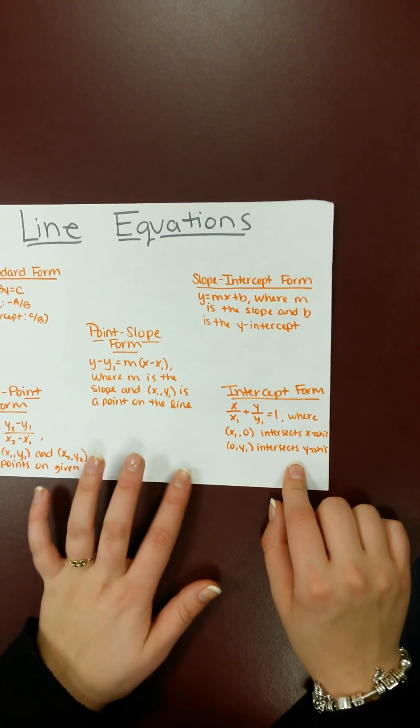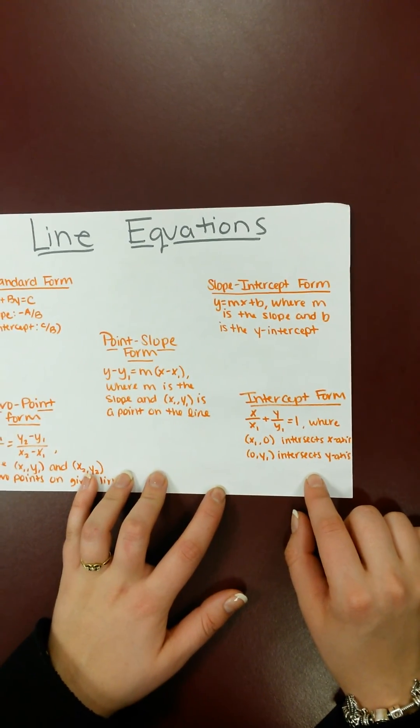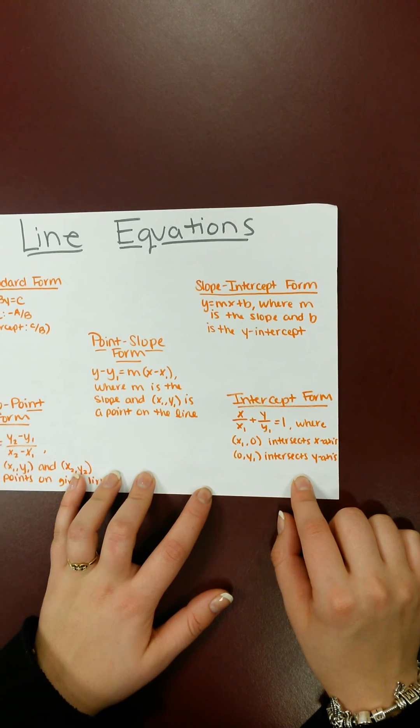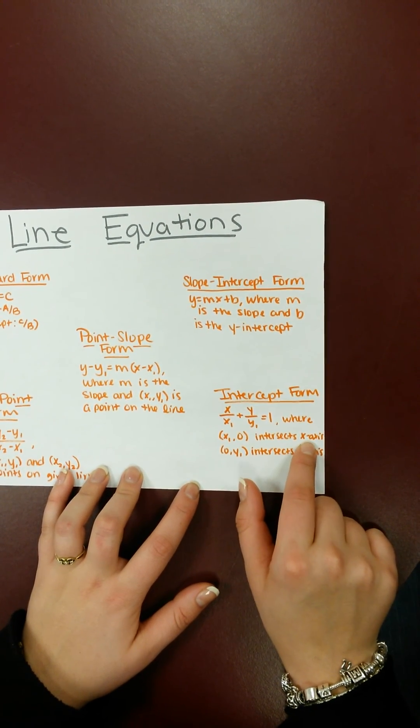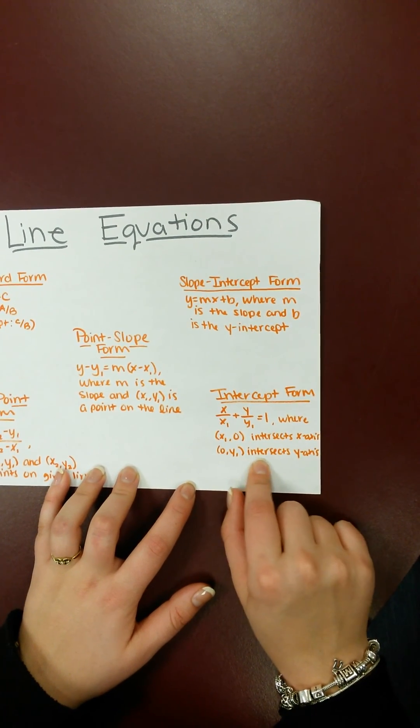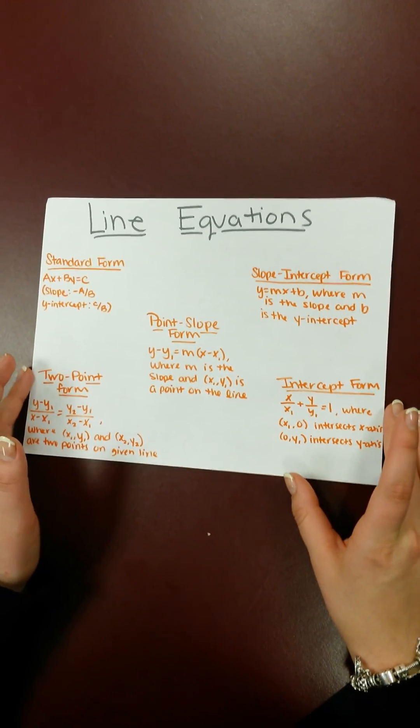So the next thing is intercept form. That's X over X1 plus Y over Y1 is equal to 1, where X1, 0 intersects the X-axis, and 0, Y1 intersects the Y-axis. That's all for today.